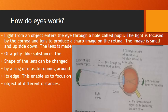How do eyes work? Light from an object enters the eye through a hole called the pupil. The light is focused by the cornea and lens to produce an image on the retina. The image is small and upside down. The lens is made of a jelly-like substance, and its shape can be changed by a ring of muscles running around its edge. This enables us to focus on objects at different distances.